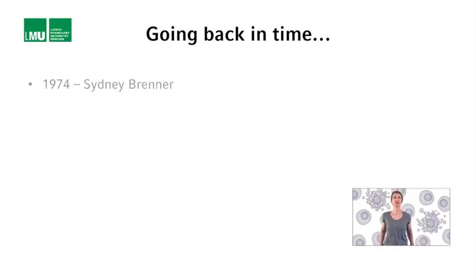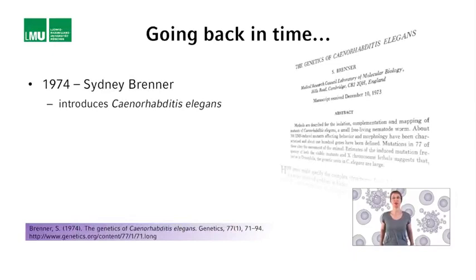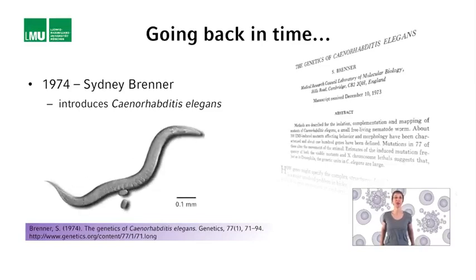Something that turned out to be extremely important for studies on apoptosis was a publication in 1974 by Sidney Brenner, an investigator at the MRC Laboratory of Molecular Biology in Cambridge, UK. With his publication in the journal Genetics, Sidney Brenner introduced a new model organism to the international research community: the nematode Caenorhabditis elegans, or short C. elegans.